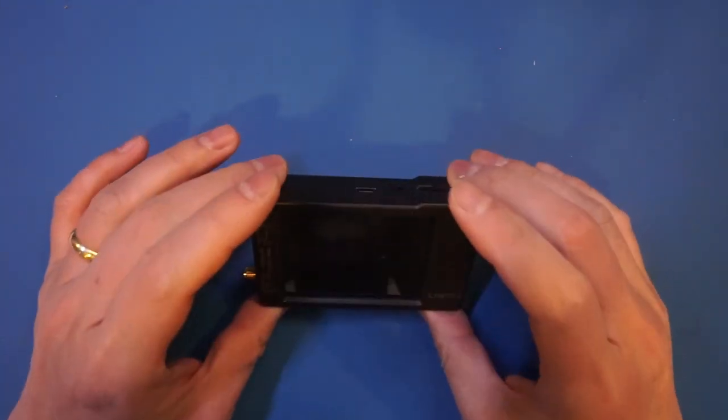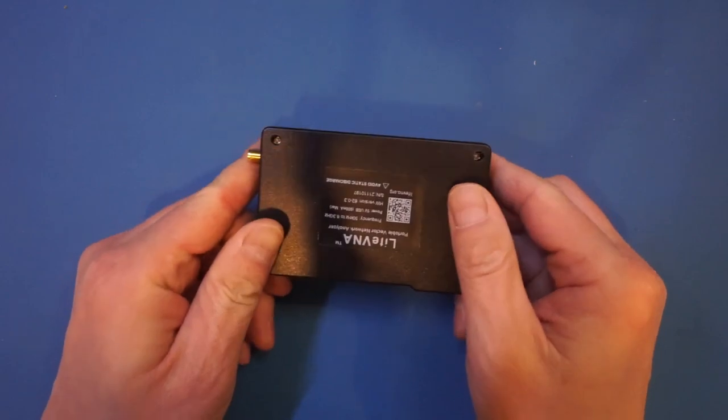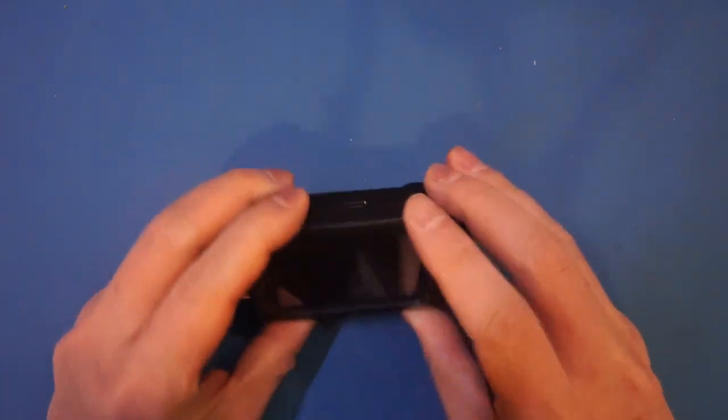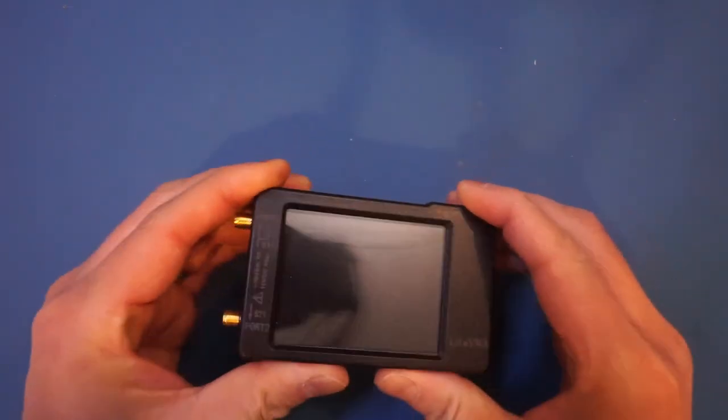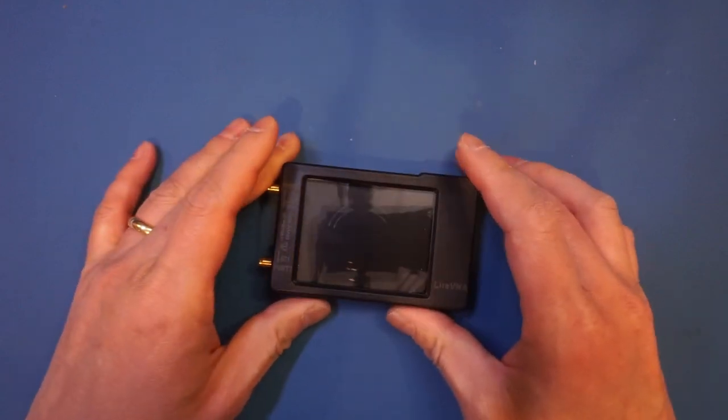The build quality is quite good. Although the case is made of plastic, it does not feel flimsy, it is rather sturdy. But unlike a metal case like the one we saw in the Nano VNA-F V2, you don't get the extra shielding provided by the metal enclosure.